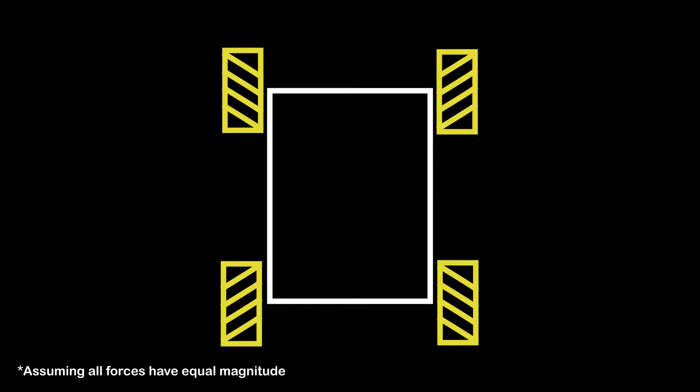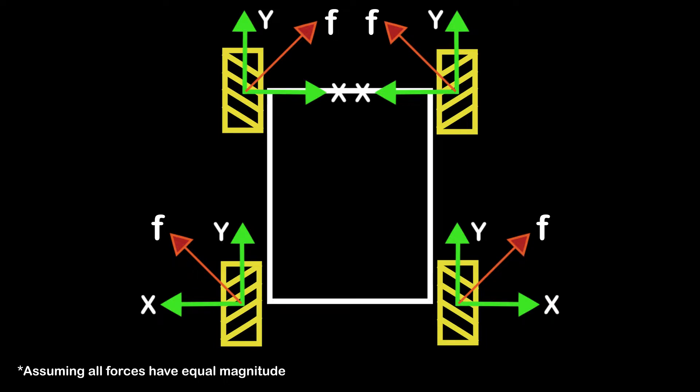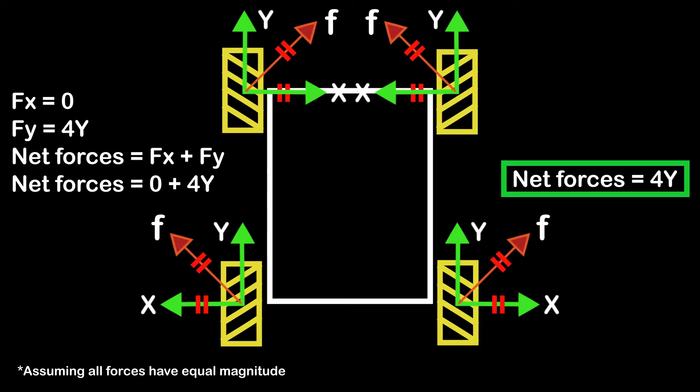Imagine our robot moving in the forward direction. The wheels rotate clockwise, generating friction forces and their components. At first, it looks like it won't go straight. But wait - if we calculate the net forces in the forward direction, these forces cancel each other because they are equal and opposite. Only the Y direction forces remain, which is what we need. Now our bot will move forward.